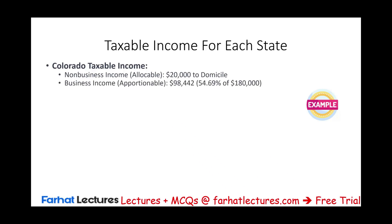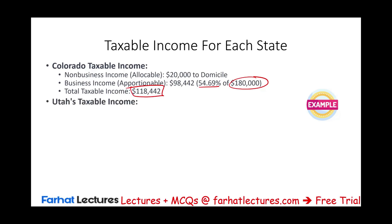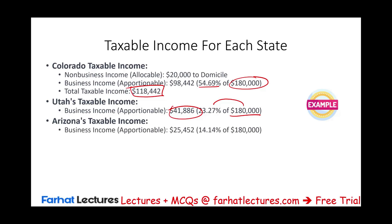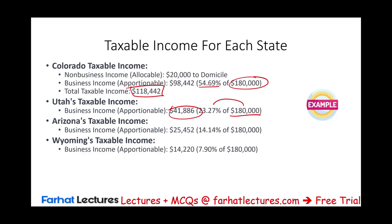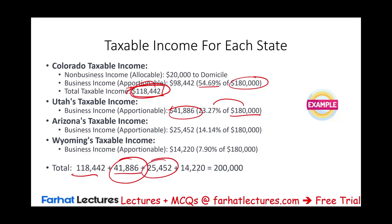Allocating taxable income to each state: Colorado gets $20,000 (allocated) plus 54.69% × $180,000, totaling $118,442. Utah gets 23.27% × $180,000. Arizona gets 14.14% × $180,000 = $25,452. Wyoming gets 7.90% × $180,000 = $14,220. Adding all amounts together totals $200,000, meaning the company must file four different state income tax returns, one for each state.